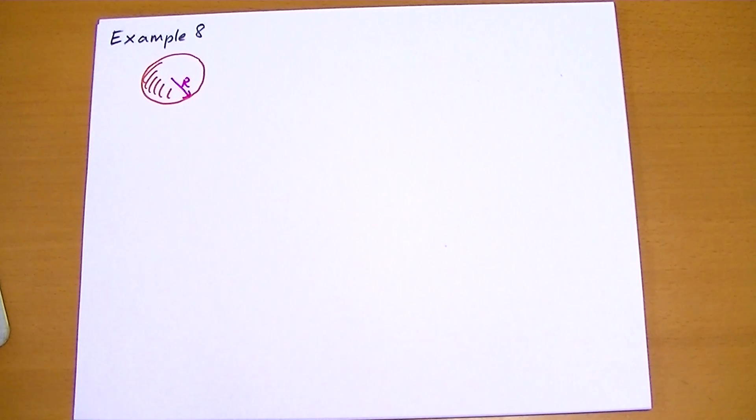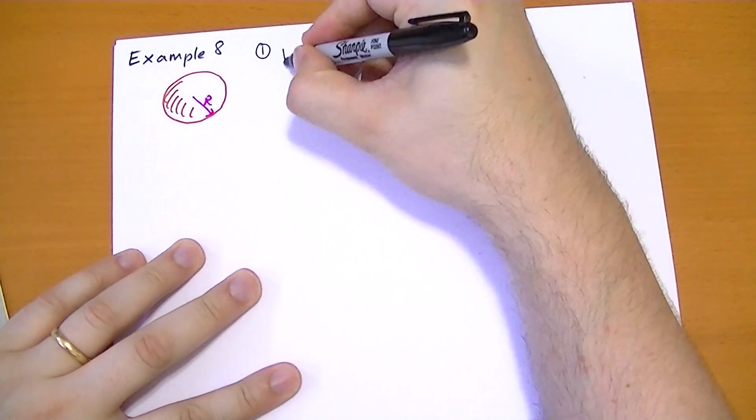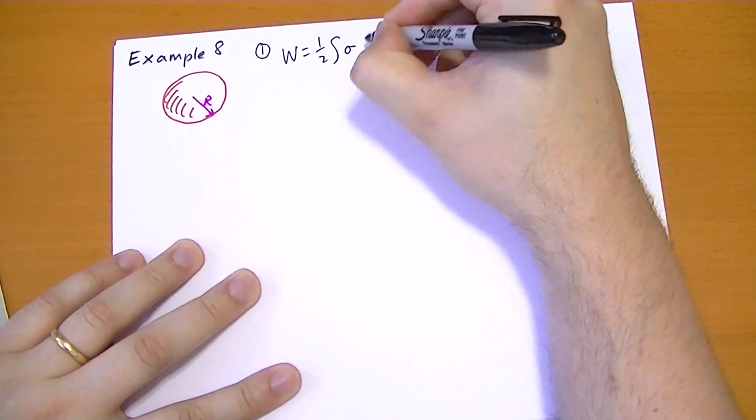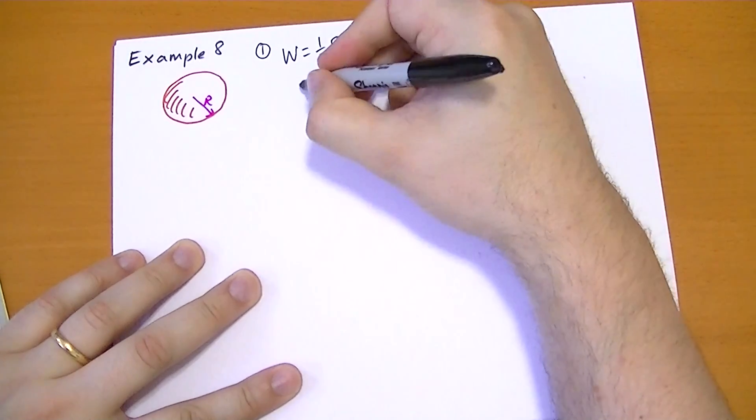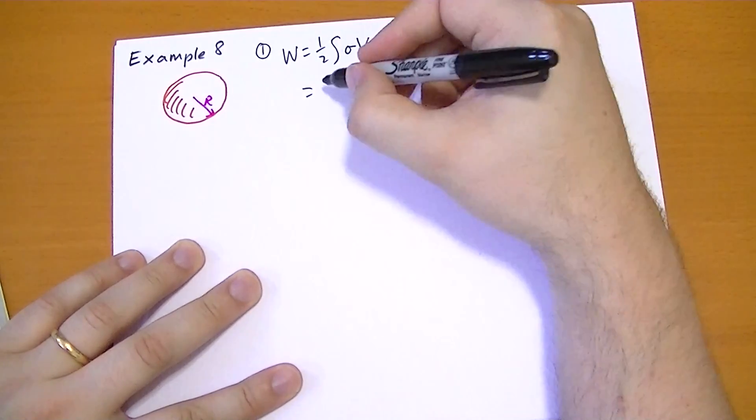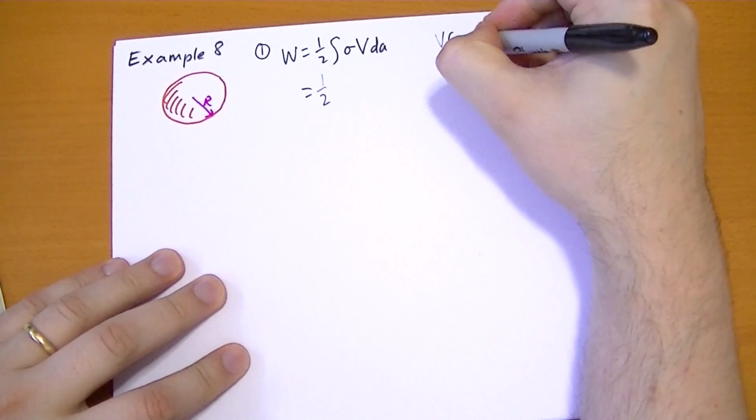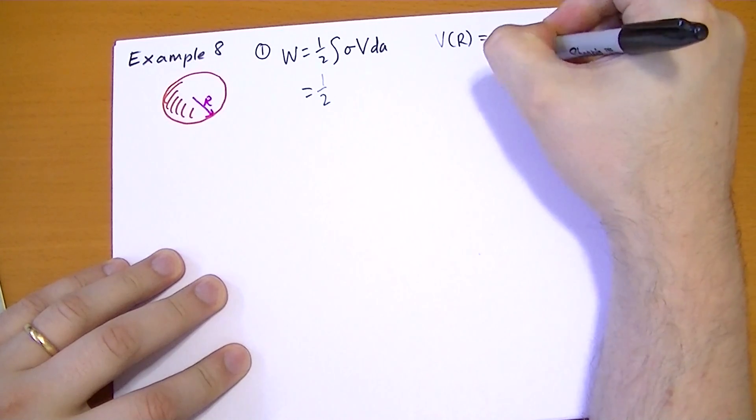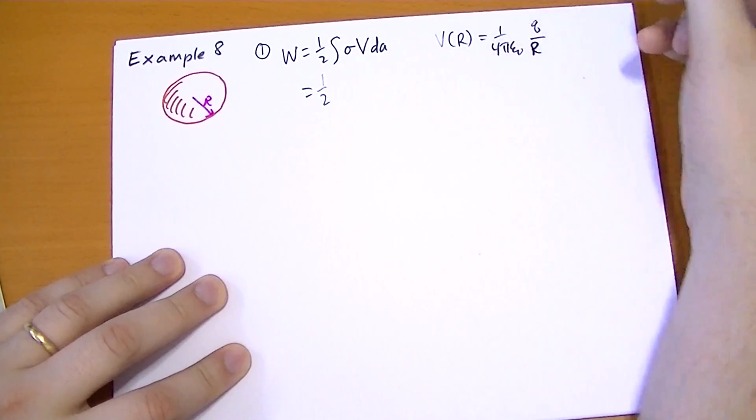So one way we can do this, I'm going to show you two ways, just like the book does. One way is to do this. We say the energy is one half the integral of the surface charge density times the potential times the area. The surface charge density should be constant as well as the potential. So the potential at radius R is going to be 1 over 4 pi epsilon naught, total charge divided by the distance, R.